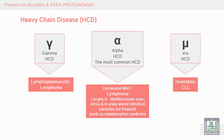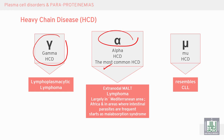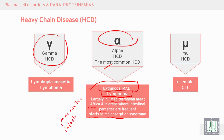Heavy chain disease involves the heavy chains: gamma, alpha, and mu. Gamma heavy chain is associated with lymphoplasmacytic lymphoma. Alpha heavy chain disease is the most common type, characterized by extranodal mucosa-associated lymphoid tissue (MALT) lymphoma. This MALT lymphoma is largely seen in the Mediterranean area and Africa, where intestinal parasites are frequent. The condition starts with malabsorption syndrome due to parasitic infestation and transforms to extranodal MALT lymphoma, characterized by association with alpha heavy chain.